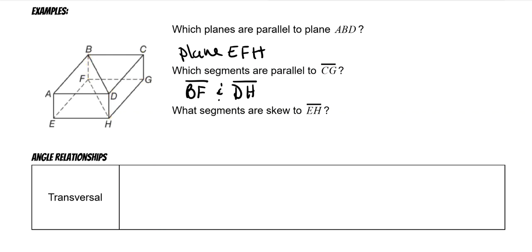What segments are skewed to EH? EH is here. Remember, skew lines are not on the same plane — they cannot be on the front, side, or back of the box, or the bottom. CG is on a different plane and does not touch it. BF is on a different plane and doesn't touch it. BC is on a different plane and doesn't touch it. BD is on a different plane and does not touch EH. Every other segment is either sharing the same plane or it will touch.